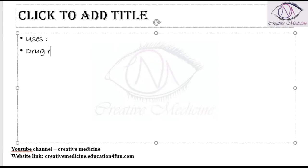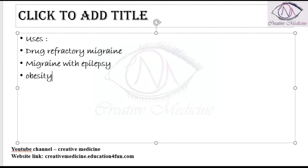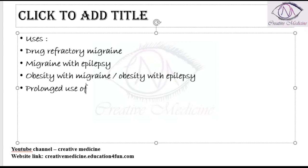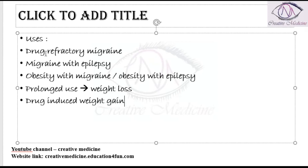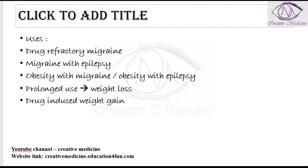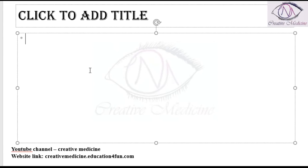The uses of topiramate include: it is used in drug-refractory migraine, it can be used in migraine with epilepsy, it is used in obesity with migraine episodes or obesity with epilepsy. Prolonged use of topiramate results in weight loss, and it can also be used for drug-induced weight gain.